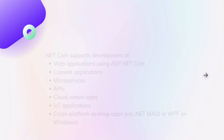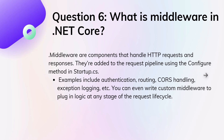Sixth question: what is middleware in .NET Core? This is the most asked question in interviews, so please keep a note of this. Middleware are components that handle HTTP requests and responses. They are added to the request pipeline using the Configure method in the Startup.cs class. Examples include authentication, routing, CORS handling, exception handling, logging, etc. You can even write custom middleware to plug in logic at any stage of your request cycle.